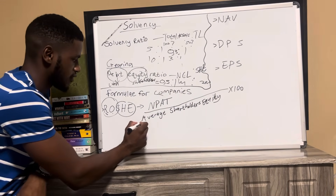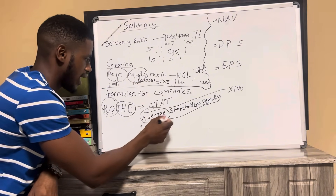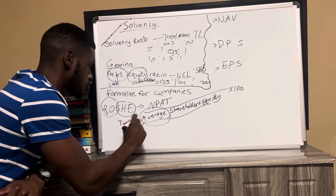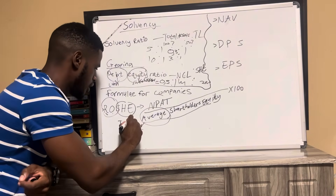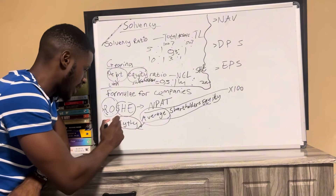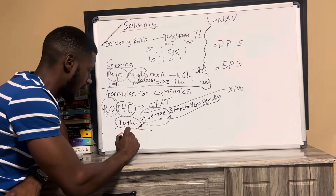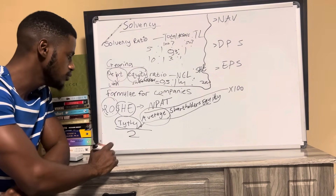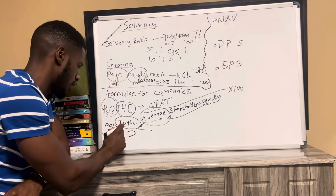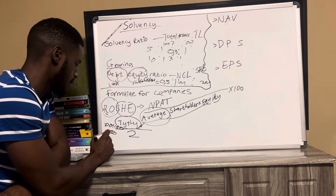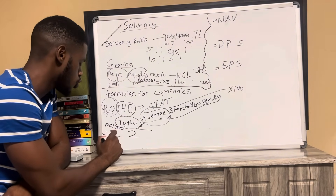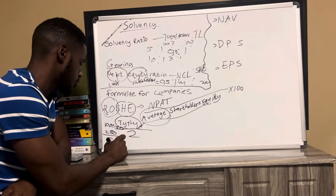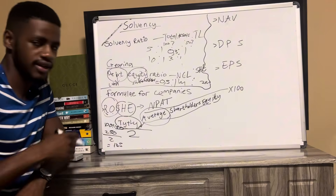What do we mean by average shareholders' equity? Average means we take this year's shareholders' equity plus last year's shareholders' equity, then divide by two. For example, if last year was 100 and this year is 150, we say 100 plus 150 equals 250, divided by 2, giving us an average of 125.